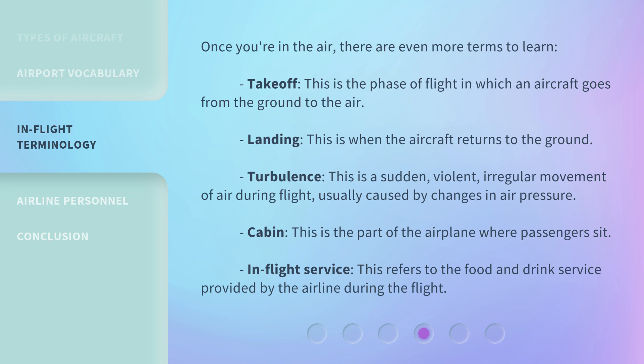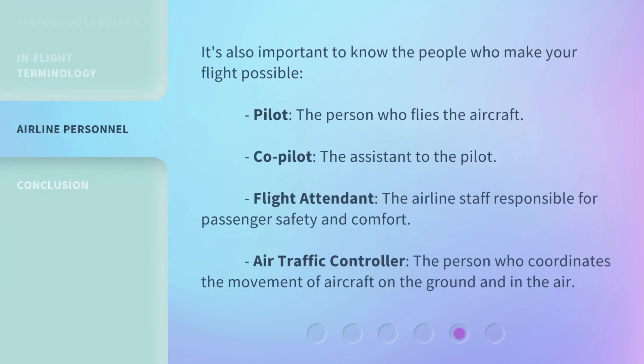Cabin: this is the part of the airplane where passengers sit. In-flight service: this refers to the food and drink service provided by the airline during the flight. It's also important to know the people who make your flight possible.